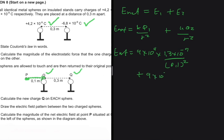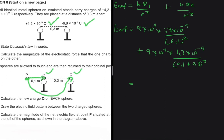For E2: k = 9×10⁹, q = 1.3×10⁻⁹ — both charges now have the same magnitude. The distance from P to the second charge is 0.1 + 0.3 = 0.4 metres, so r2² = 0.4². Adding the two contributions gives a net electric field of approximately 1.1×10⁴ newtons per coulomb.